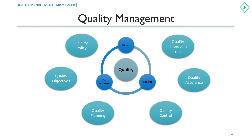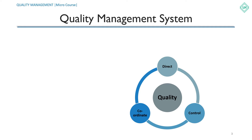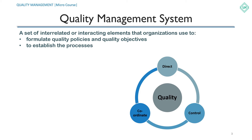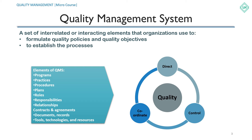To establish quality management in the organization, we make use of a quality management system. A quality management system, or QMS, is a set of interrelated or interacting elements that organizations use to formulate quality policies and quality objectives, and to establish the processes needed to ensure that policies are followed and objectives are achieved. These elements include structures, programs, practices, procedures, plans, rules, responsibilities, relationships, contracts, agreements, documents, records, methods, tools, techniques, technologies, and resources.